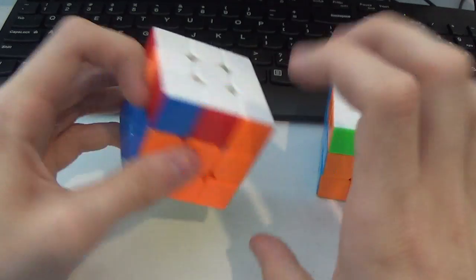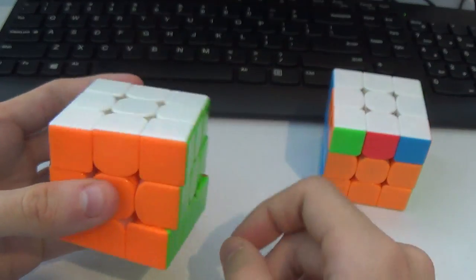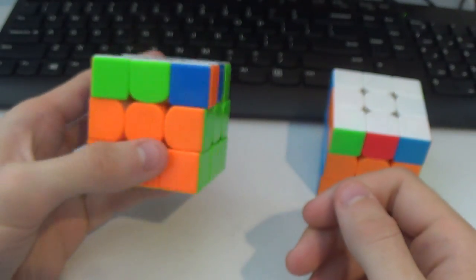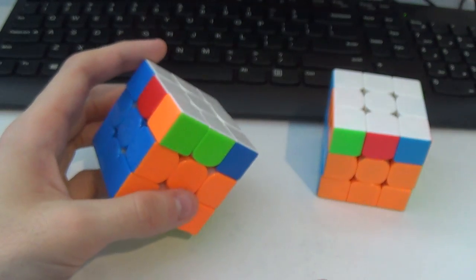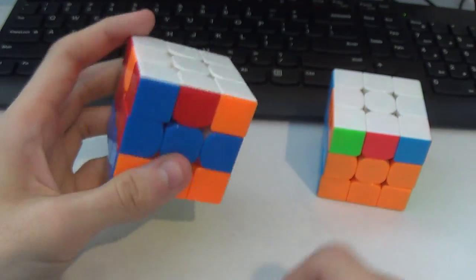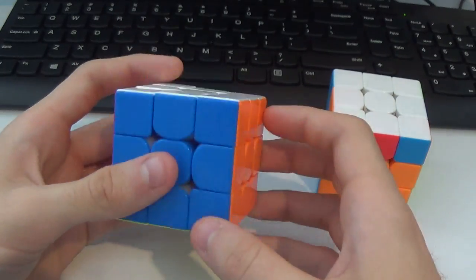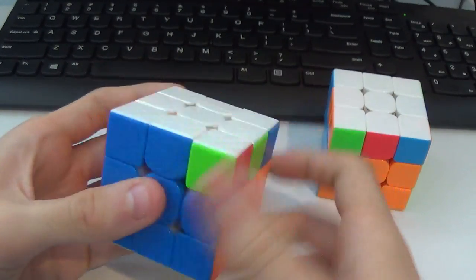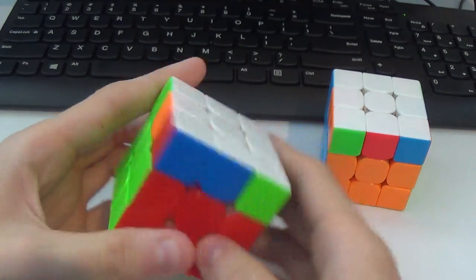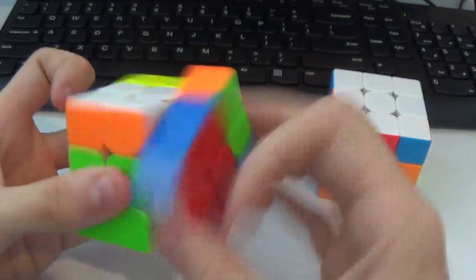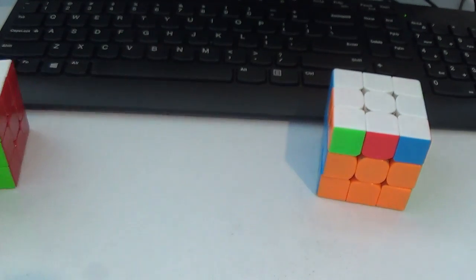So normally people would do something like U-prime and an R-U-D G-perm, like that, or you could be woke and do a fat U-prime, and then cancel both those AUFs at the end like that. So I'll show that again. So U-prime into stuff, fat U-prime, and then it's all good.